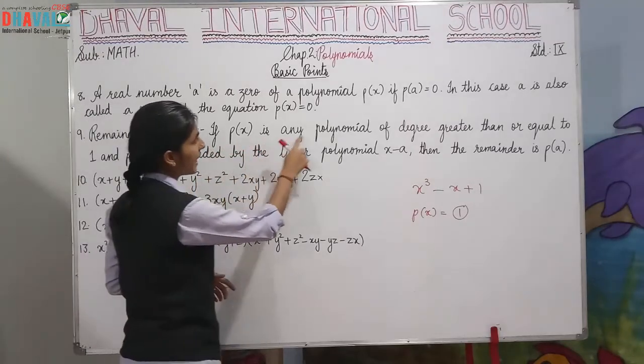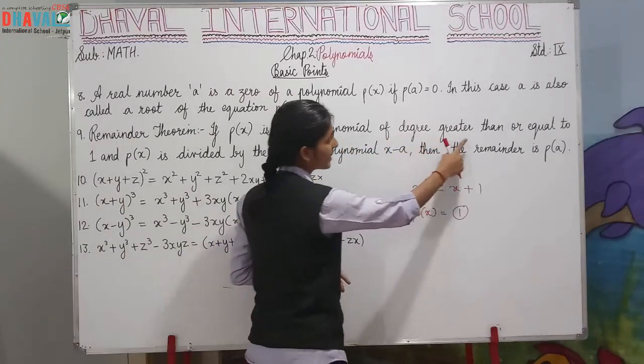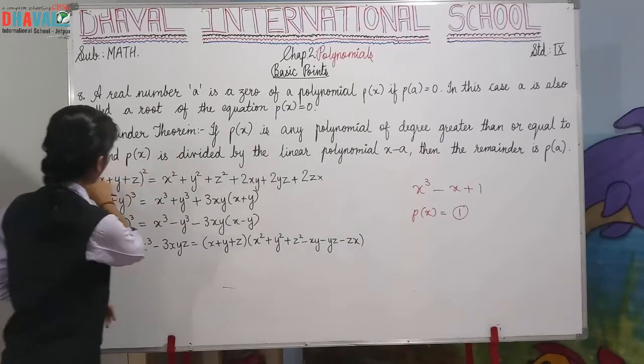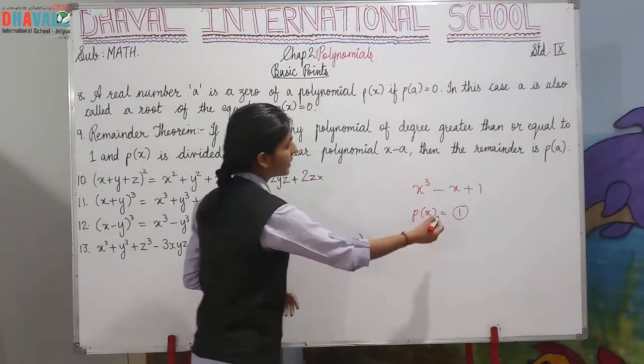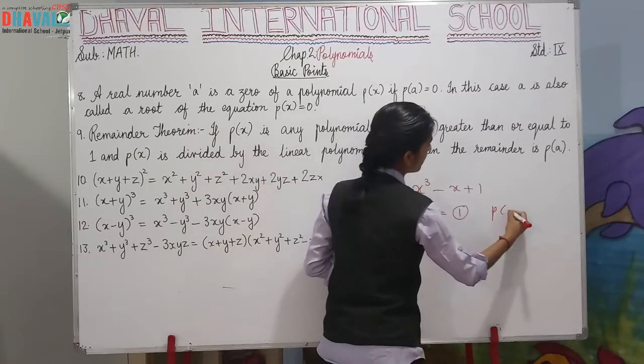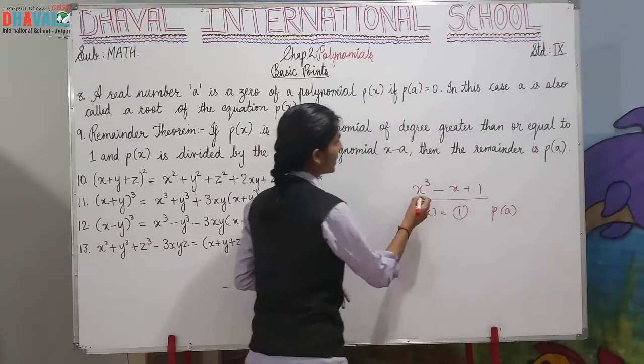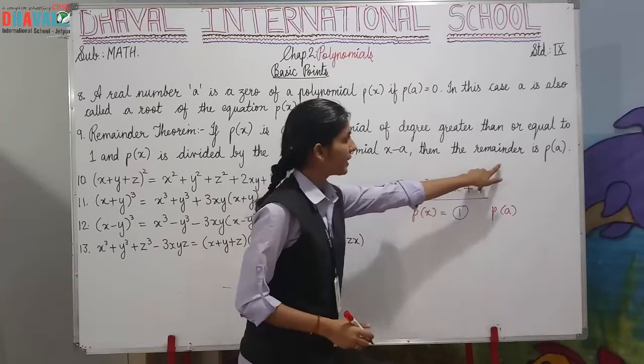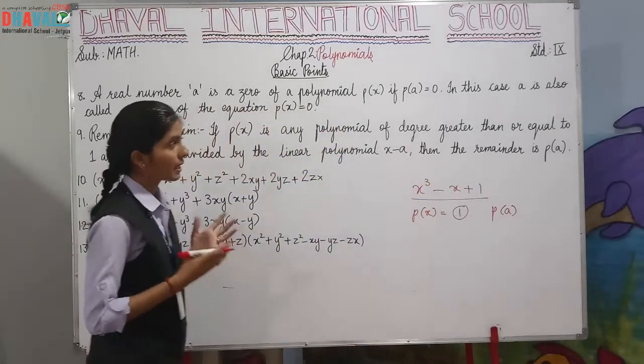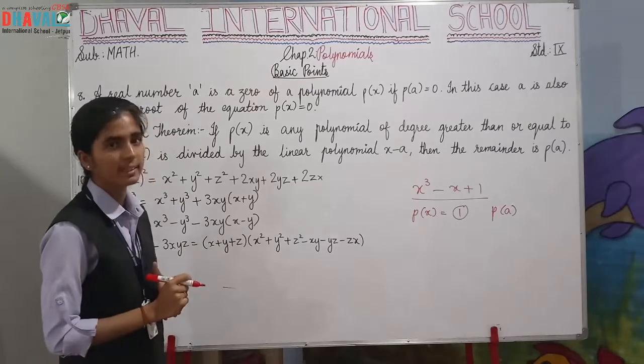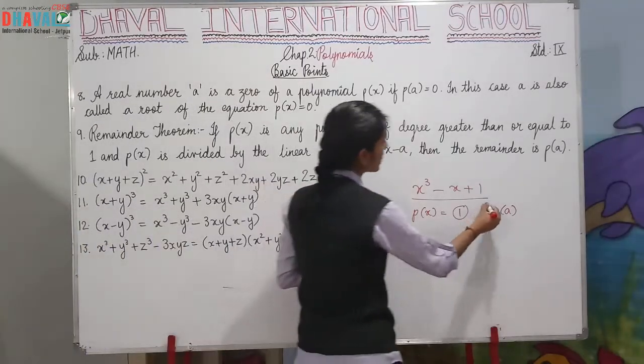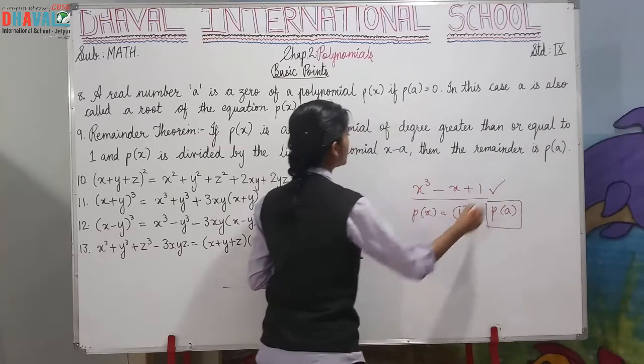If P(x) is any polynomial of degree greater than or equal to 1 and P(x) is divided by linear polynomial x minus a, then the remainder is P(a). If the remainder is not zero, then we can call this as a remainder of this polynomial.